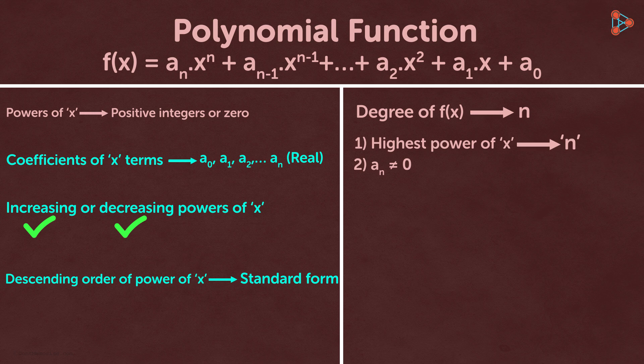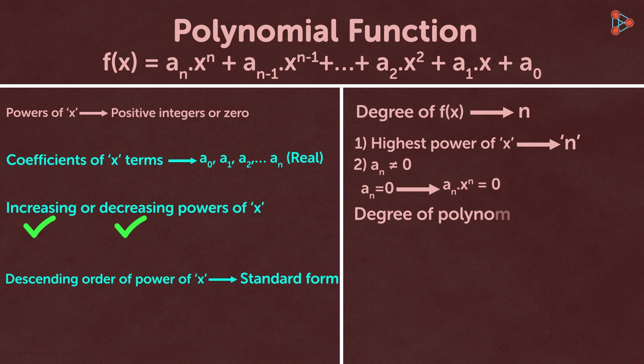What happens when a_n is equal to 0? Then the term a_n multiplied by x raised to n would be 0, making the degree of the polynomial n-1. So we know what the degree of a polynomial is.